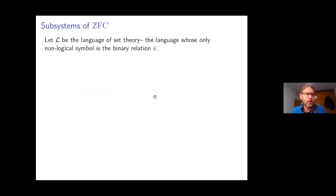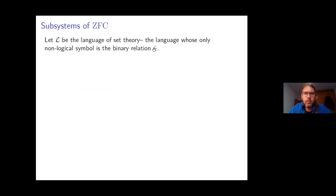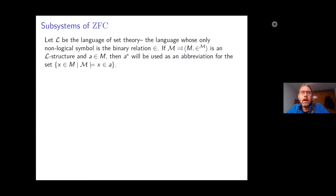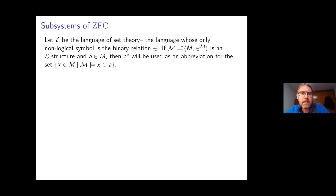Throughout this talk, L will be used to denote the language of set theory: first order logic with a binary membership relation. If M is a structure in the language of set theory — an underlying set together with the interpretation of the membership symbol — and A is a point in this structure, then I'm going to use A* as an abbreviation for the set of all points in M that M thinks belong to A, i.e., the extension of A.